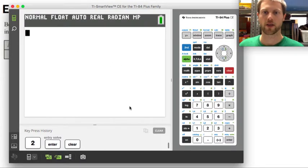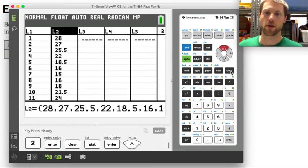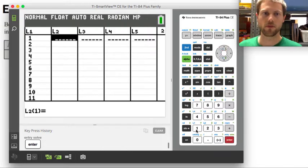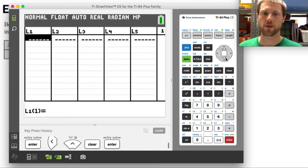In order to plug in the data I need to go to stat and then hit enter on edit. I already have a couple lists here. So I'm going to scroll up and clear out my L1 and clear out my L2 by pressing clear and then enter.